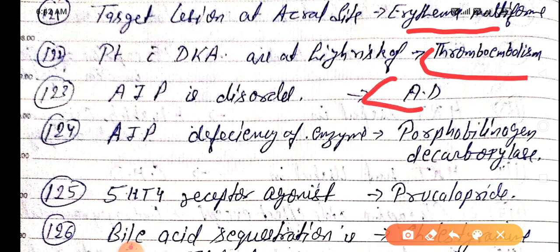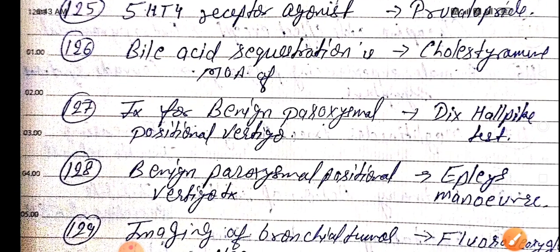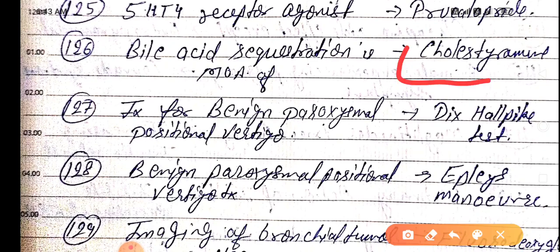AIP — acute intermittent porphyria — is a disorder of autosomal dominant inheritance. The enzyme deficiency in AIP is porphobilinogen decarboxylase. The 5HT4 receptor agonist is prucalopride. Bile acid sequestration is the mechanism of action of cholestyramine.